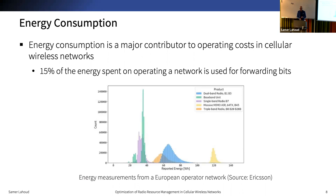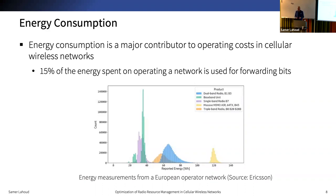In fact, energy consumption is a major contributor to operating costs in cellular wireless networks. Looking at data collected from a European network gives very interesting insights. Some products, like the baseband unit in green, are almost always activated and consume around 40 watt-hours, while others such as massive MIMO radio units consume three times more energy only when activated. This highlights the importance of deploying high-capacity, high-energy-consuming modules only where needed.